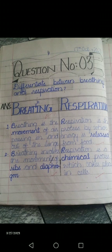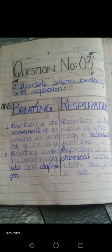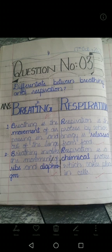Question number three: Differentiate between breathing and respiration. Breathing and respiration are both different processes. Breathing is simply the movement of air passing in and out of your lungs, while respiration is the process in which energy is released from food. First, breathing takes place and provides oxygen, which then reacts with food molecules to release energy. Breathing involves the movement of ribs and diaphragm muscles, while respiration is a chemical process that takes place in all the cells of your body.